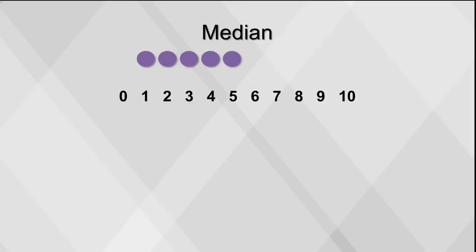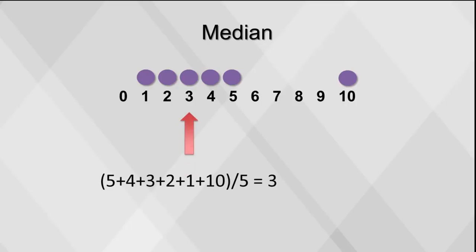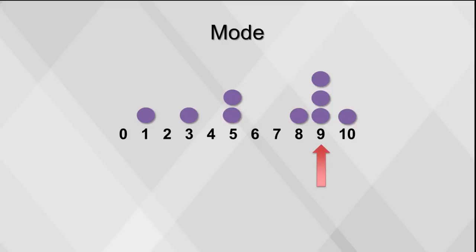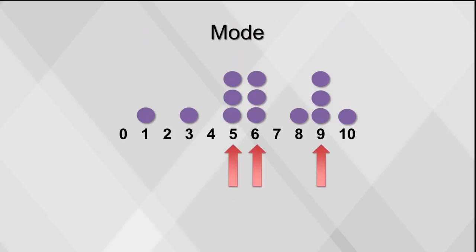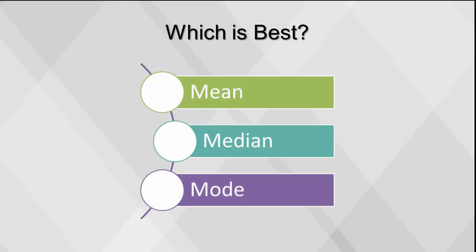The mode is the value that occurs most frequently and is only useful when we have some values clustering together. In this example, the mode is 9. There may be no mode, or there may be several modes. There is no single measure of center that is best. If the data are normally distributed, then mean is used. However, if data are not normally distributed, the median is a better measure. Often we use both to understand the underlying structure of the distribution.